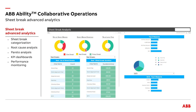Another aspect is root cause analysis. We pull all of this data into the Ability system and leverage analytics tools to troubleshoot and diagnose what is causing sheet breaks, allowing us to reduce their number. Another area I want to briefly touch upon is grade changes.